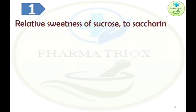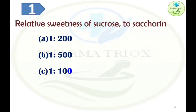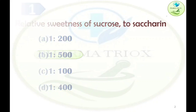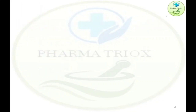Relative sweetness of sucrose to saccharin. Option A: 1 is to 200. Option B: 1 is to 500. Option C: 1 is to 100. Option D: 1 is to 400. The correct answer is option B, 1 is to 500. We are going to discuss this question in detail.